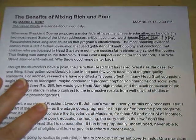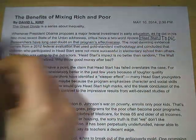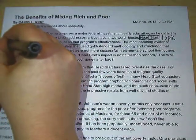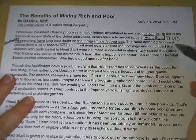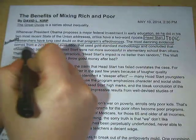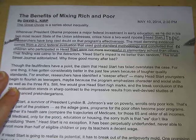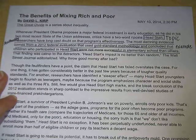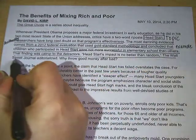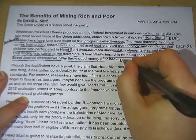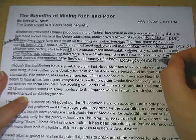After that we have three sentences and there are three different types of evidence. Researchers have long cast doubt on the program's effectiveness — anytime you see 'researchers,' that is an authority. The most damning evidence comes from an evaluation — that is an example of how Head Start is not effective. And what the Wall Street Journal said is another example. But headlines can also be an emotional appeal.